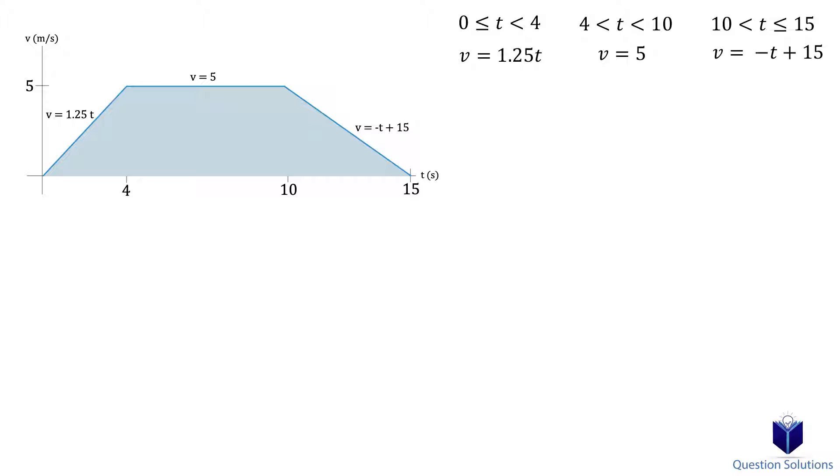To figure out the acceleration, we need to remember that acceleration is equal to the derivative of velocity with respect to time. Taking the derivative of each velocity equation gives us the acceleration. Since we only need the acceleration at 8 seconds and 12 seconds, we just need to look for the segment corresponding to the time. For 8 seconds, we see that the acceleration is 0 meters per second squared, and for 12 seconds, we see that it's negative 1 meters per second squared.